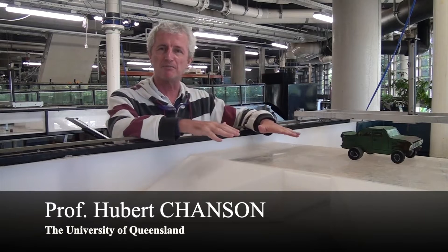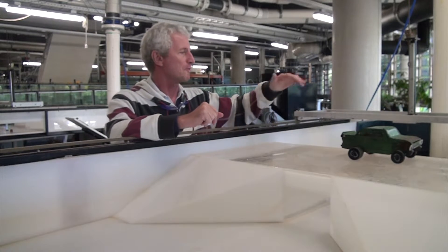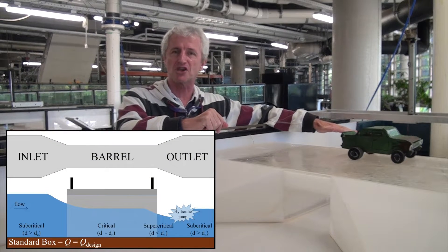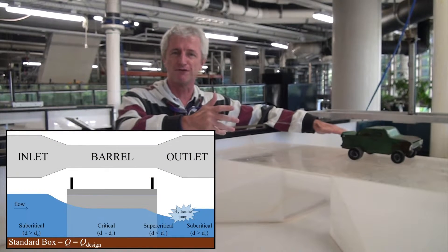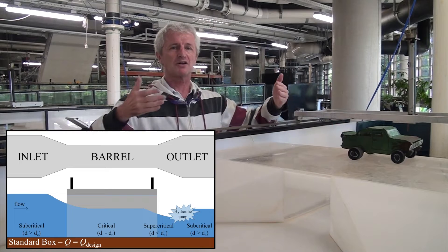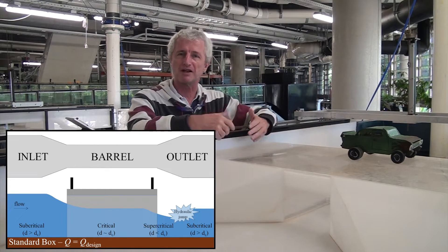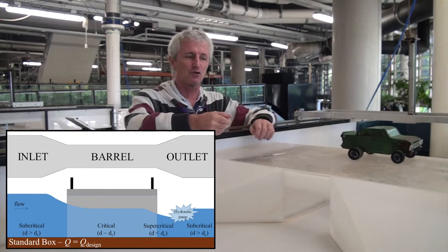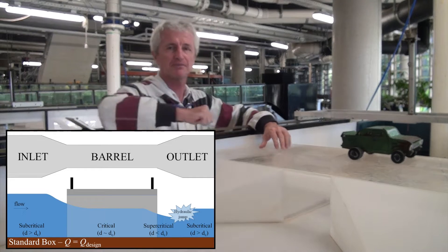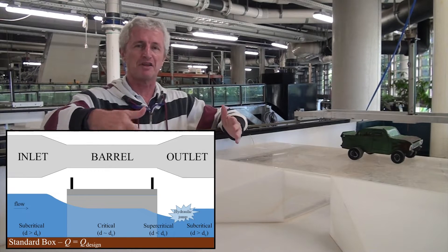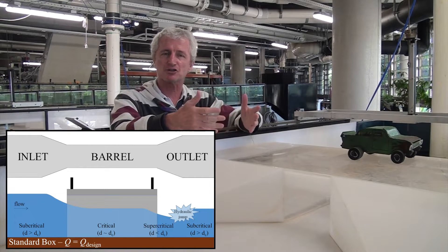Typically, when we have a mild floodplain like in Eastern Australia, upstream of the embankment the water will be subcritical — that is, it will be a fluvial motion. As the water is contracted into the tunnel, it will become critical at design flow condition inside the tunnel. And as it exits the tunnel, it will start to expand depending upon the geometry, which may create an incipient hydraulic jump or hydraulic jump.